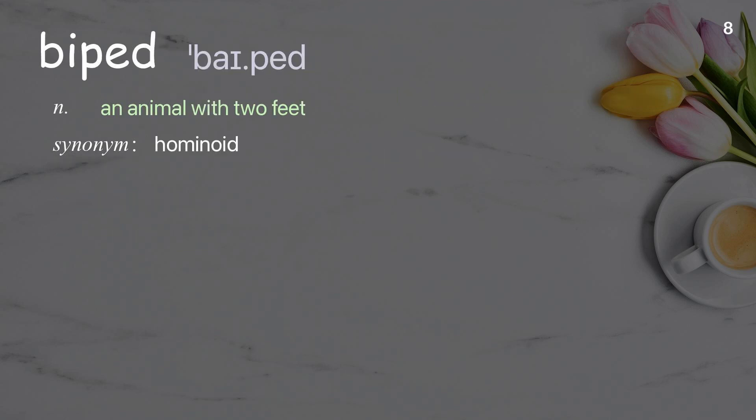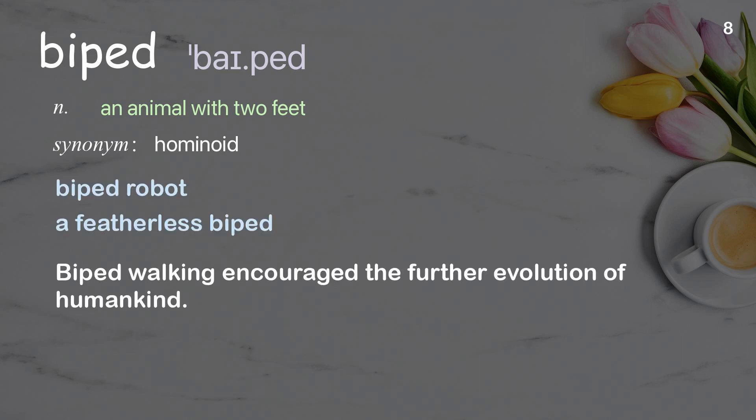Biped: an animal with two feet. Examples: biped robot, a featherless biped. Biped walking encouraged the further evolution of humankind.